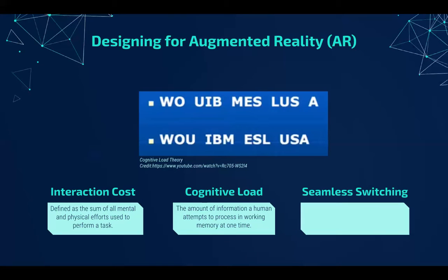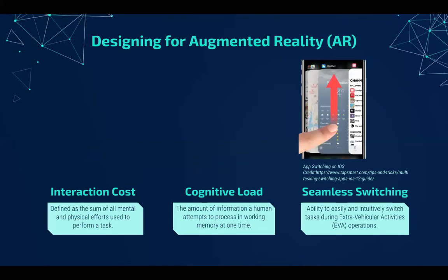The last consideration is seamless task switching. When you operate your smartphone, you're very easily able to switch applications or tasks through the app browser. Similarly, we want our AR system to exhibit the same qualities when switching from an operation such as navigation to another such as geology sampling. Overall, we'll keep these three theories in mind when showcasing our AR UI.